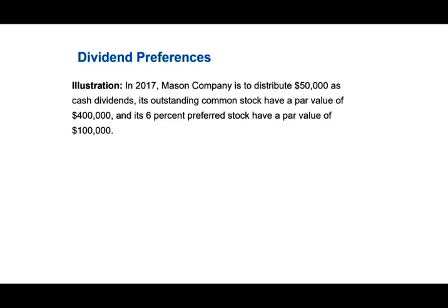Let's go ahead and talk about dividend preference. What is dividend preference? Who gets the dividend preference? Only the preferred shareholders. Simply put, the preferred shareholders, in contrast to the common stockholders, they get their money first — they get their dividend first. Let's work an example. Let's assume in 2017, M Company is to distribute $50,000 as cash dividend. The common stock has a par value of $400,000, and the 6% preferred stock has a par value of $100,000.